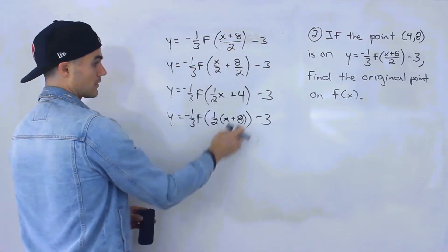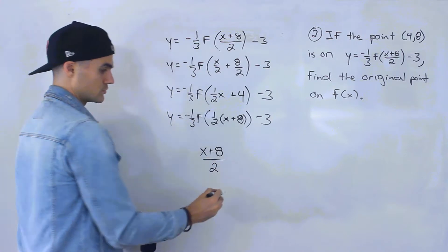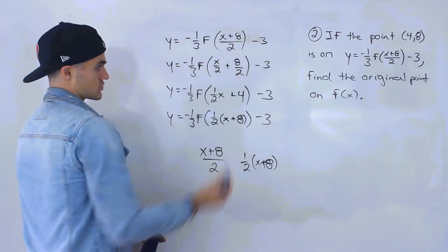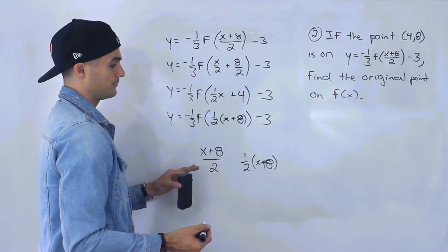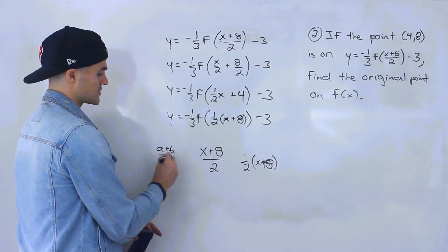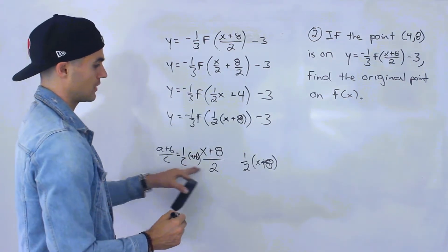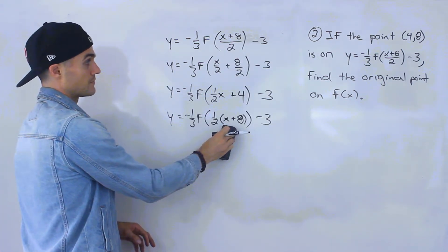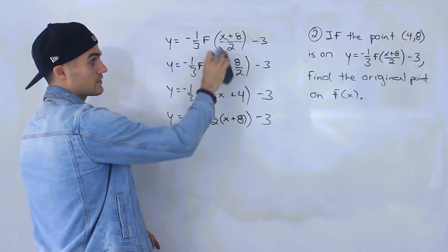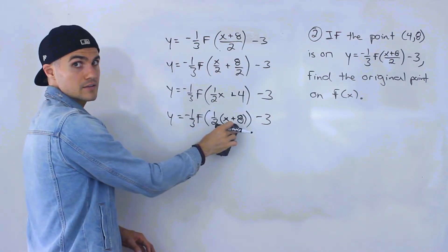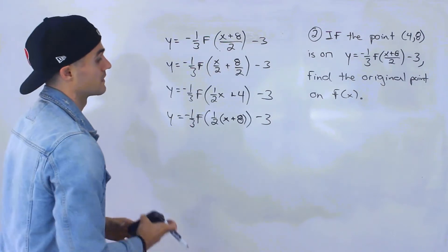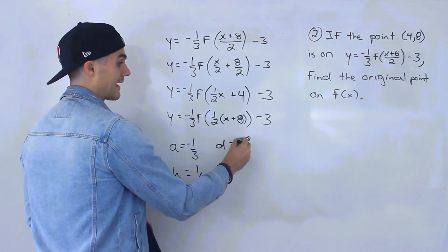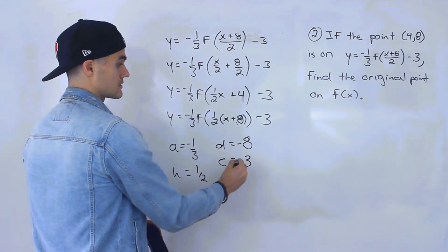We could have factored out the 2 from x plus 8 over 2 directly to get one-half times (x + 8) — either approach reaches the same result. From this form we can read off: a equals negative one-third, k equals one-half, d equals negative 8 (opposite sign), and c equals negative 3.